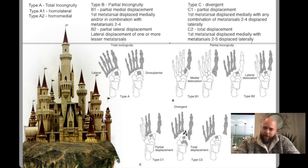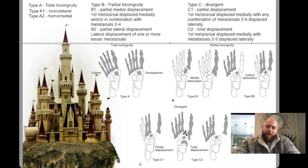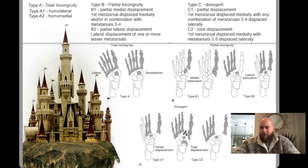You need to compare this to the Quenu and Kuss classification, which is an easier classification system. If you're asked about Lisfranc classification, start with Quenu and Kuss — it's easier. The Hardcastle is harder, so don't go there unless you have to. Also, don't mix up that Quenu and Kuss describes A's as homolateral, B's as isolateral, and C's as divergent, whereas in Hardcastle, A's are total incongruity, B's are partial incongruity, and C's are still divergent. Just a little different terminology there.